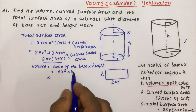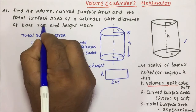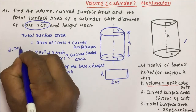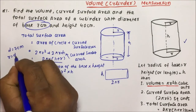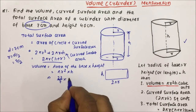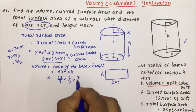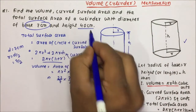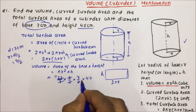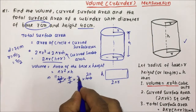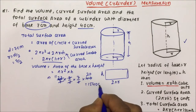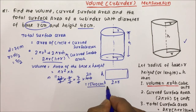Let's calculate the volume first. The diameter of the base is given as 7 cm, so the radius will become diameter divided by 2, which is 7/2. Here π is 22/7, so volume = (22/7) × (7/2) × (7/2) × 40. The 7s cancel, giving 2 × 11 times and 2 × 20 times. So 7 × 2 = 14, and 14 × 11 = 154 × 10 = 1540 cm³ is the volume of the cylinder.